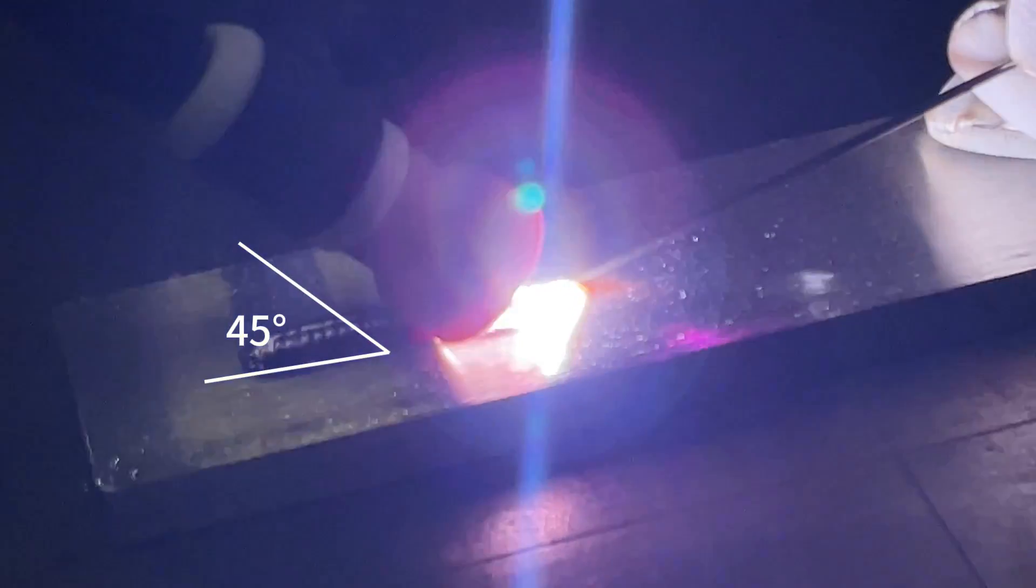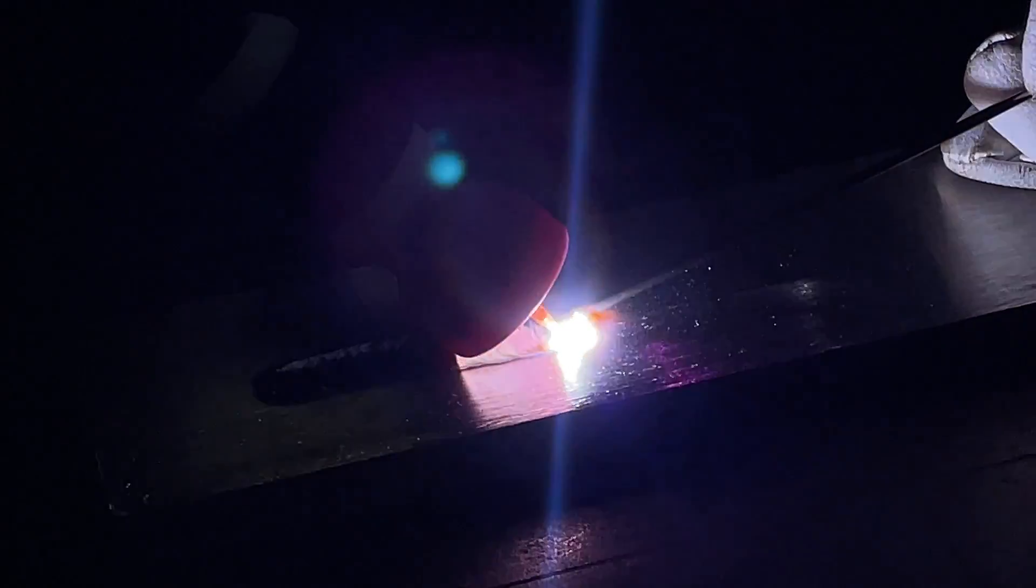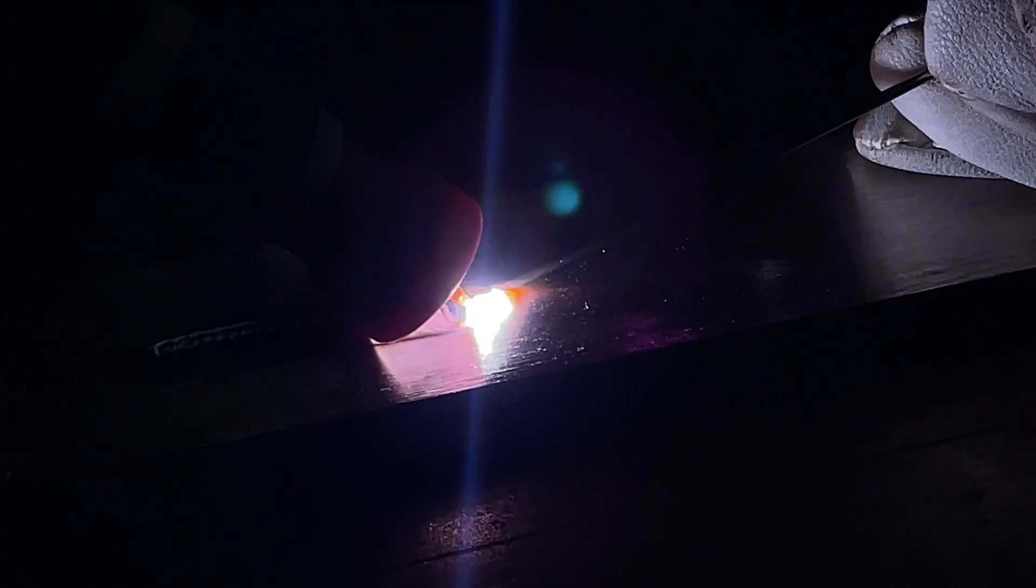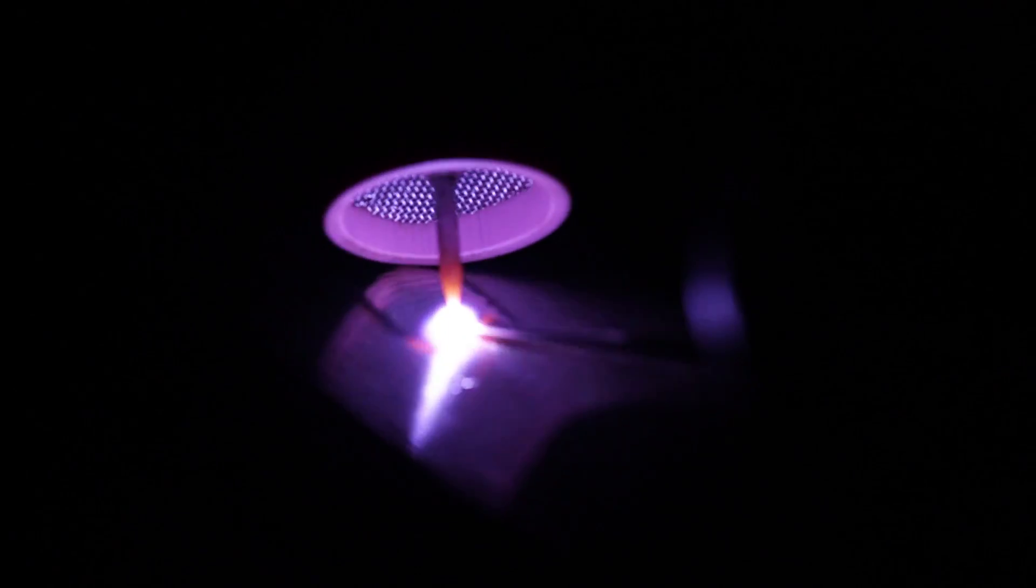Tilt the torch at a 45-degree angle relative to the workpiece to ensure even heat distribution. Move the torch steadily along the joint, keeping the weld pool uniform. Add filler metal consistently to avoid excessive buildup or undercutting.